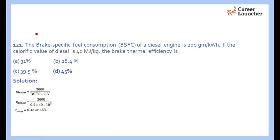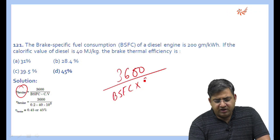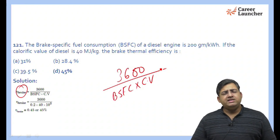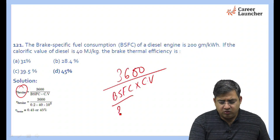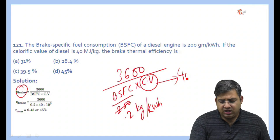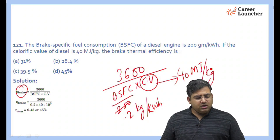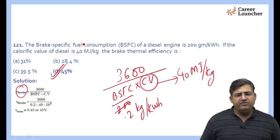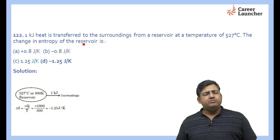The next question asks us to find brake efficiency, given by 3600 / (BSFC × calorific value). BSFC is 200 grams per kilowatt-hour = 0.2 kg/kWh, and calorific value is 40 MJ/kg. Substituting these values gives brake efficiency = 45 percent.